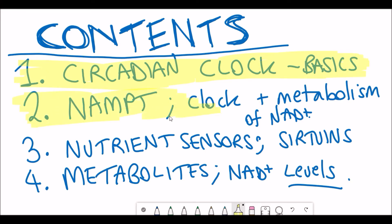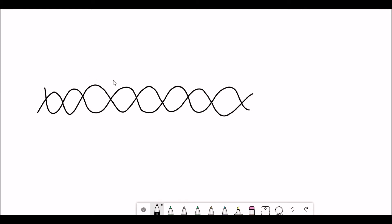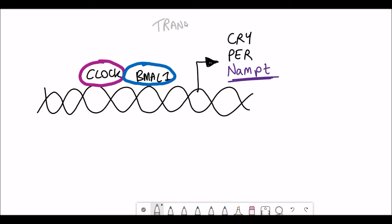And so this negative feedback loop regulates that 24 hour cycles in all of these different metabolic and physiological processes that go on in the cell. And so in addition to cryptochrome and period, another gene that they upregulate is nicotinamide phosphoribosyltransferase or NAMPT. I have literally no idea how you're supposed to say it. Let's go for NAMPT because it's easy to say.